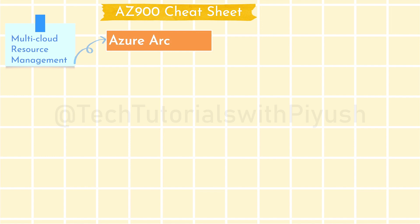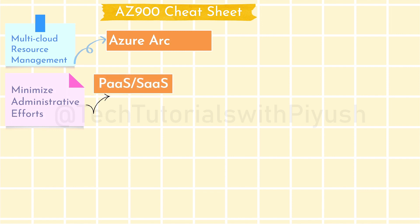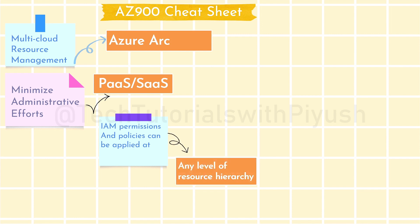When the question talks about minimizing administrative efforts, the answer is either PaaS or SaaS, because in IaaS the user usually takes care of all administrative tasks such as server patching, upgrades, and similar things, whereas in PaaS and SaaS those tasks are taken care of by Microsoft. Azure policies and permissions can be applied at all levels of the resource hierarchy.